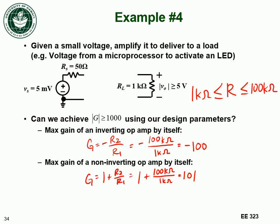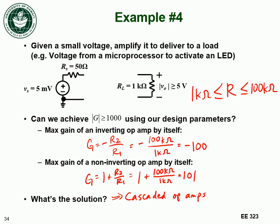So neither op amp by itself can reach the gain we want. The solution is to cascade op amps. We can model each op amp using a voltage amplifier model, and we've done cascaded amplifier models before — so we'll cascade our op amps, making a two-stage cascaded amplifier using the inverting op amp and the non-inverting op amp.